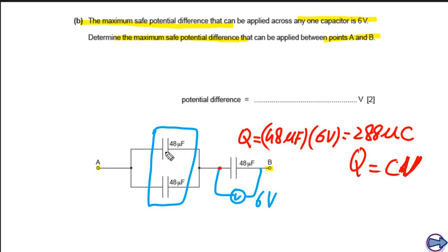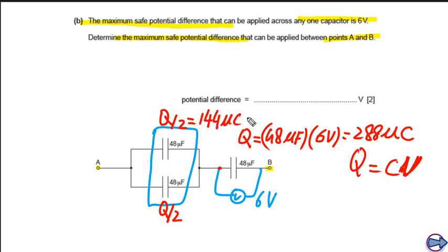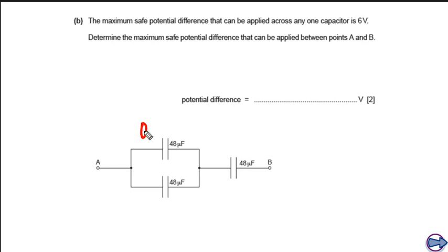The series capacitor and the parallel pair share the same charge since they are in series. So the charge on the parallel pair is also 288 microcoulombs total, but this splits equally: each parallel capacitor carries Q divided by 2, which equals 144 microcoulombs.